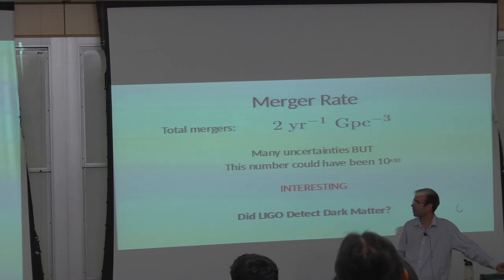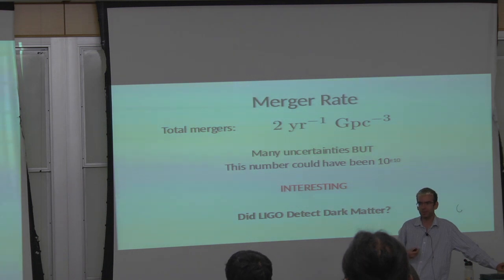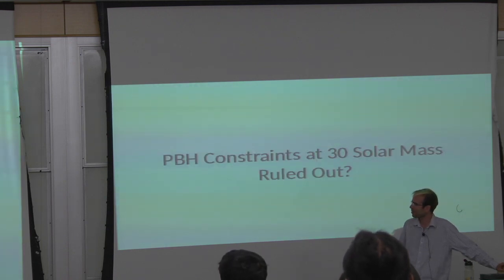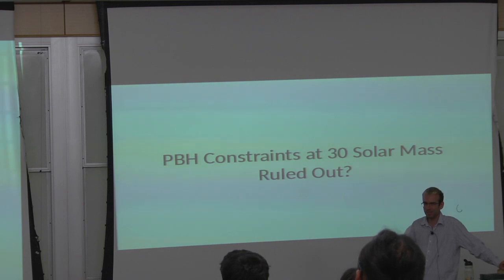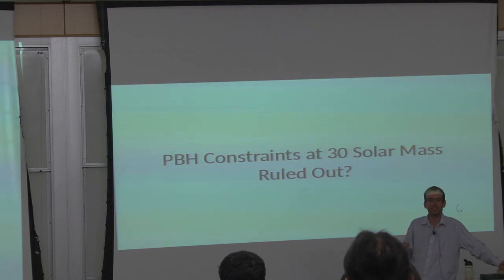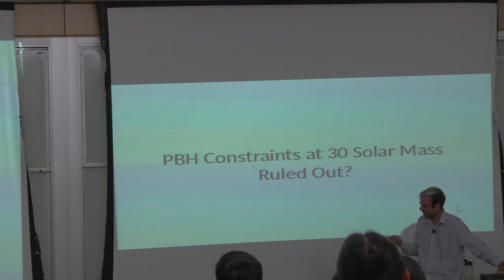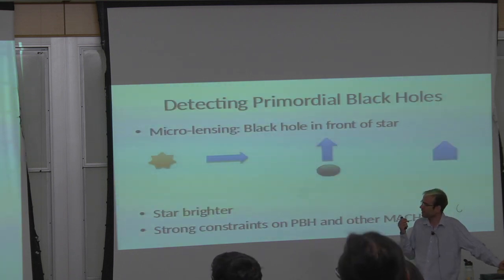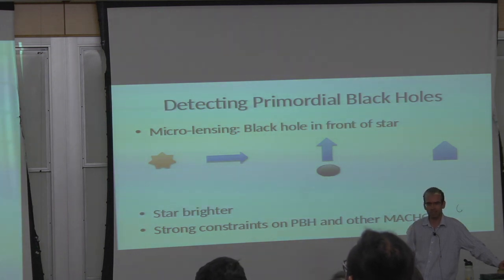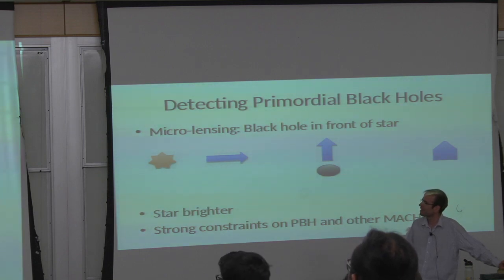Did LIGO detect dark matter, or are these black holes really the result of stellar evolution, or are they primordial? The first question everyone has is: is this ruled out — can you put constraints on the number density of black holes at 30 solar masses by some other technique? And the answer is yes. The gold standard and probably the only reliable way is microlensing. When a black hole passes in front of a star, gravitational lensing makes the star look a little bit brighter; when the black hole moves away, it gets dim again.